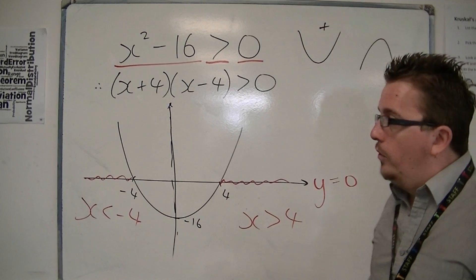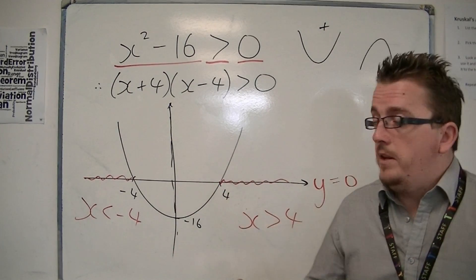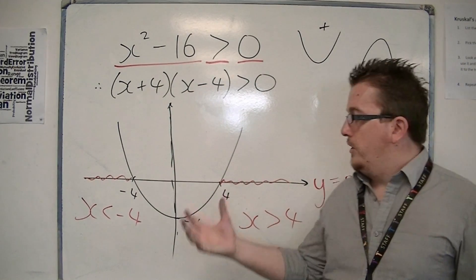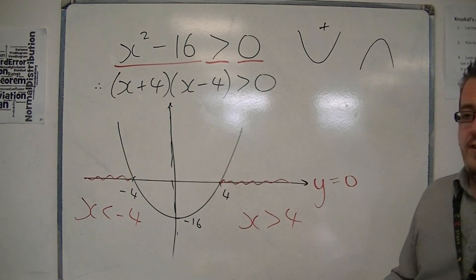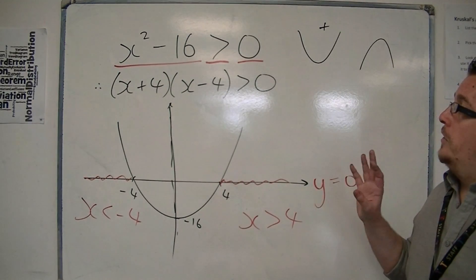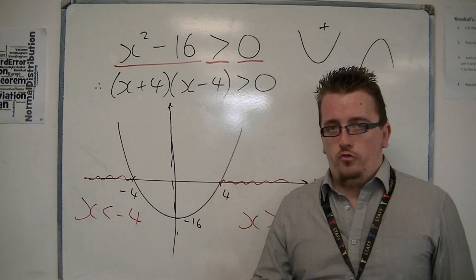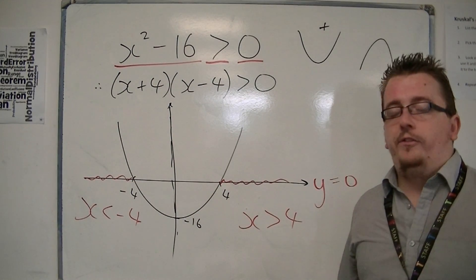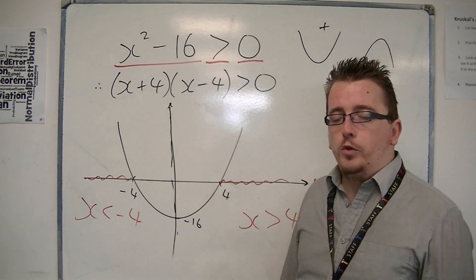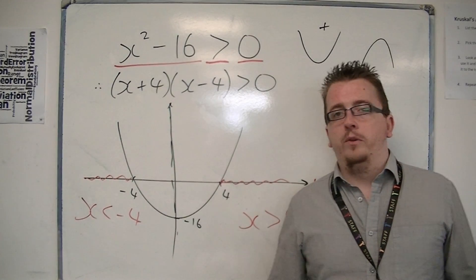And that is how we are going to be solving quadratic inequalities. We're either going to be using this factorising method, draw a sketch, and then find the pieces that we want, or we are going to be using the quadratic formula to find these two points. Draw a sketch, find the bits that we want. This is the essence of how you solve quadratic inequality, and there are going to be plenty of examples coming up in the following videos.